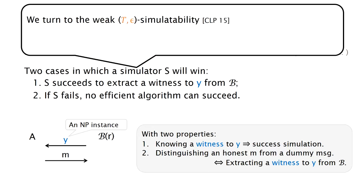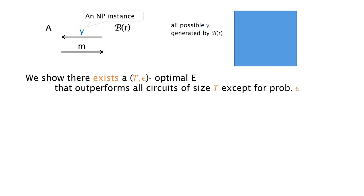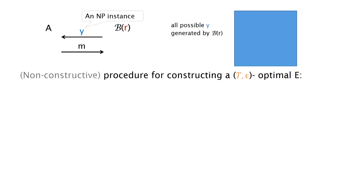For this reason, we resort to the weaker simulatability called T-epsilon simulatability. Now we just need a T-epsilon optimal extractor that outperforms all circuits of size T except for probability epsilon. Fortunately, we are able to show the existence of such an optimal extractor. The procedure for constructing such an extractor is as follows.